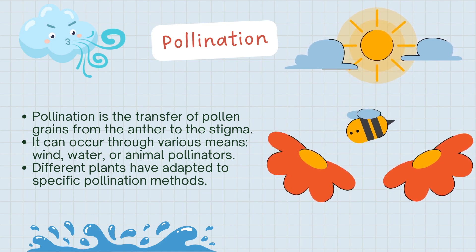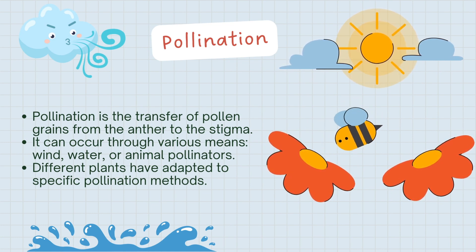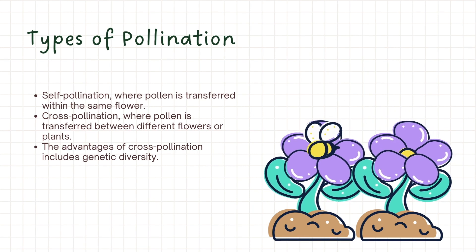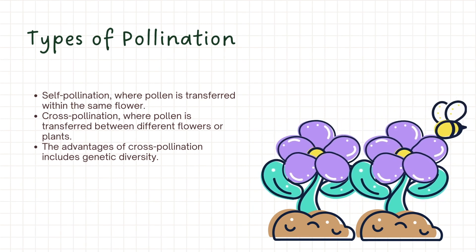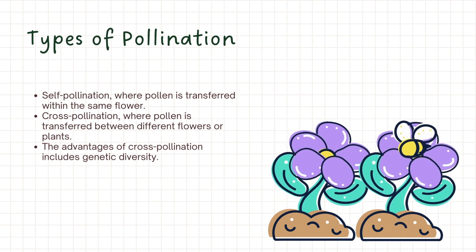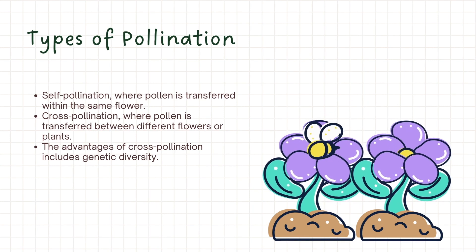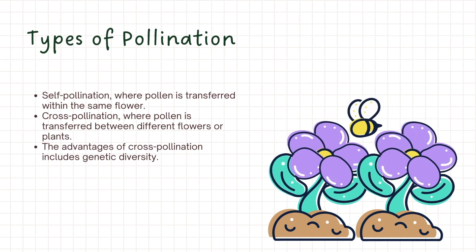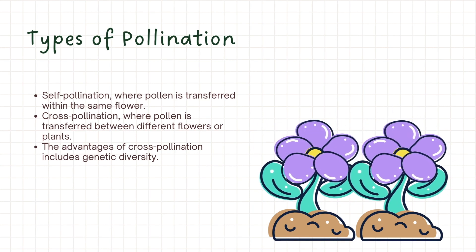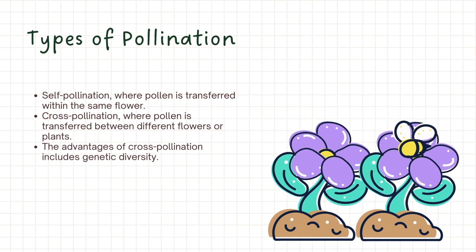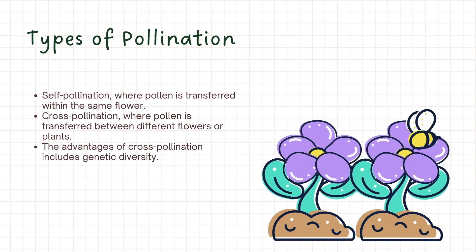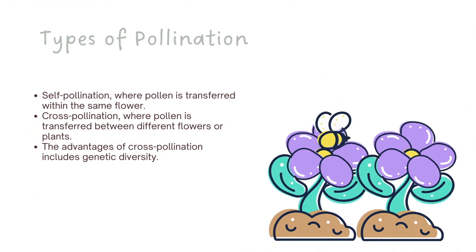Different plants have evolved specific adaptations to facilitate efficient pollination. There are two primary types of pollination: self-pollination and cross-pollination. Self-pollination occurs when pollen is transferred within the same flower or from one flower to another on the same plant. Cross-pollination involves the transfer of pollen between flowers or even different plants, promoting genetic diversity — a key factor in the survival and adaptation of plant species.